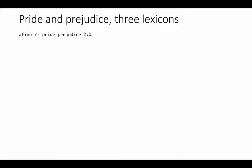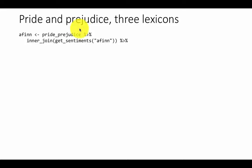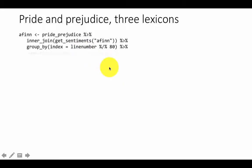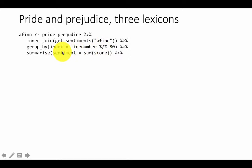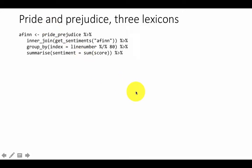Now let's look at Pride and Prejudice joined with the AFINN lexicon. We're going to use one book with three lexicons, creating three different tables. AFINN is Pride and Prejudice inner-joined with get_sentiments('AFINN'), then we do the usual group_by line number divided by 100 and summarize the sentiment for each group — a chunk of 80 lines. AFINN gives a sentiment score for every word, some negative and some positive, so the total sentiment is simply the sum of all scores.